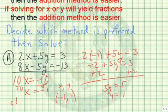By the way, a nice way of checking is by substituting each of these numbers into both equations. Notice if we put a negative 1 in for x and a 1 for y, negative 2 plus 5 is 3. Negative 8 minus 5 is negative 13. Since they both work into both equations, we know for a fact that it is correct.